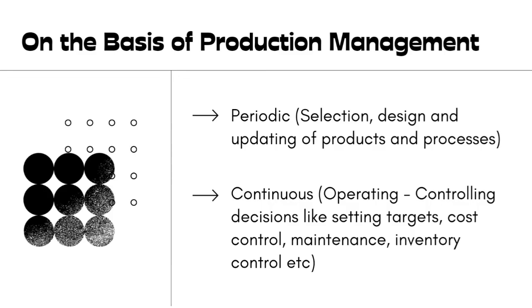First, on the basis of production management, you can classify decisions as periodic — meaning selection, design, and updation of products or processes, which happens maybe every year or every five years. Or it could be continuous decisions, such as operating and controlling decisions: setting targets, cost controlling, maintenance, and inventory control. These happen continuously, on a day-to-day basis.